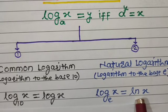Rule number 5 is the base switch rule: we can switch the base of a logarithm. The logarithm of a to the base b is equal to the reciprocal of the logarithm of b to the base a. On the left-hand side the base is b, and on the right-hand side it is 1 upon the logarithm of b to the base a.